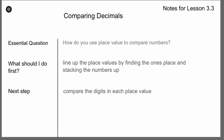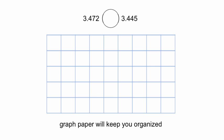Here are our notes for comparing decimals — the essential question on the top, then what should I do first, and what's my next step. If you can follow those steps, you're going to do very well. Here's a very typical problem we're going to be seeing in fifth grade, sixth grade, and beyond: which one's greater, 3.472 or 3.445? We're going to always identify what is the ones place in these numbers.